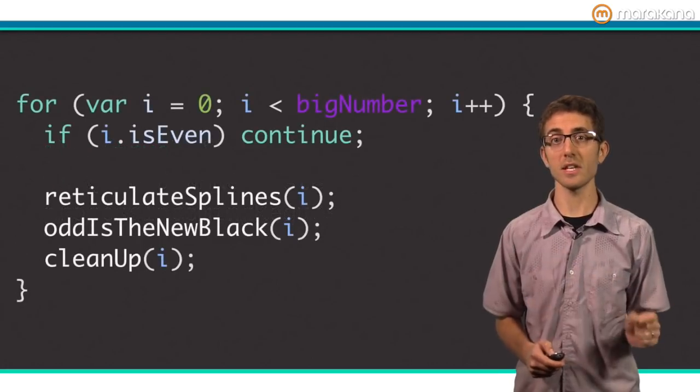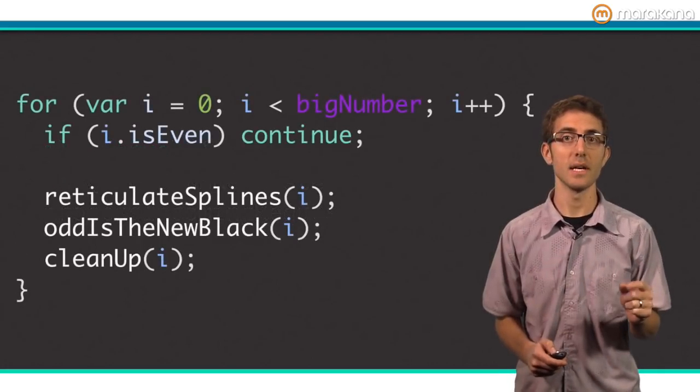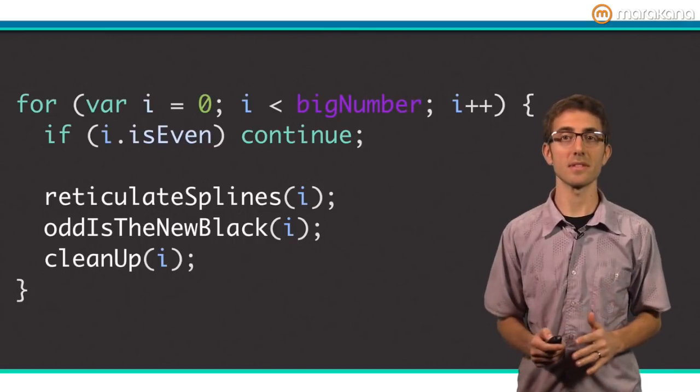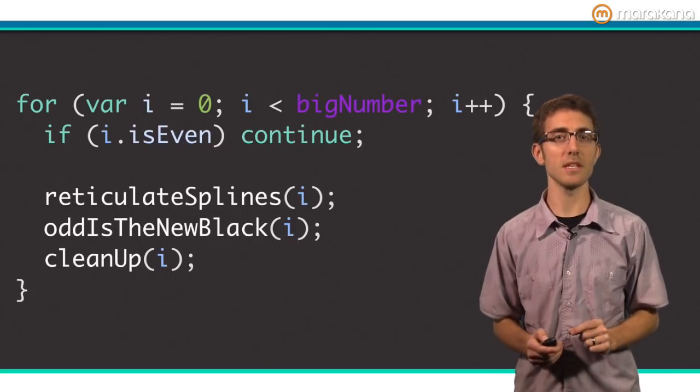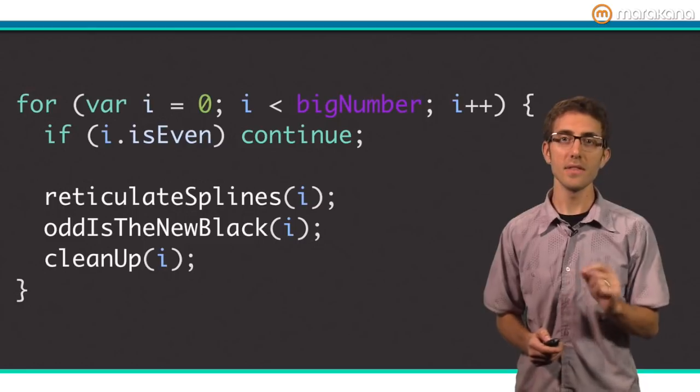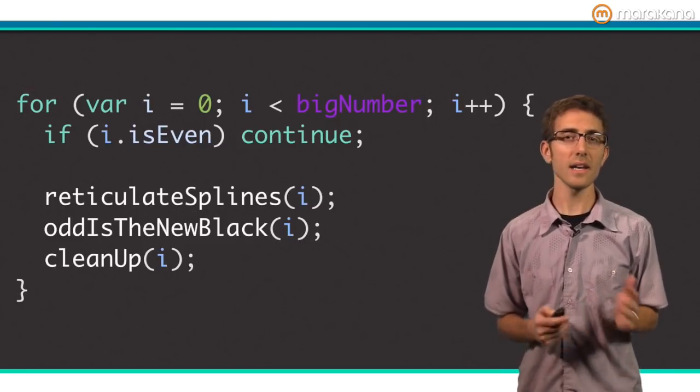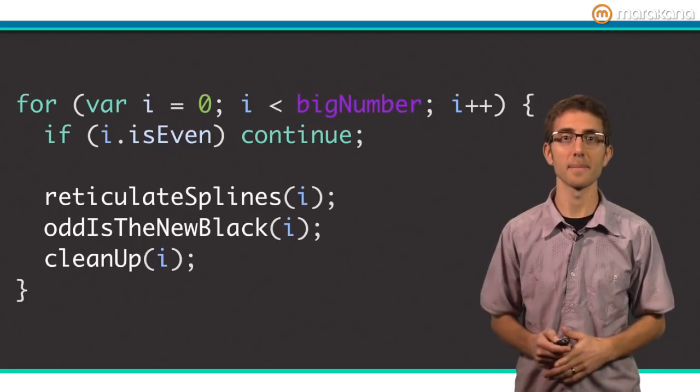You can use continue to skip to the next loop iteration. Here's an example. You can usually use if and else statements instead of continue, but sometimes it's a bit easier on the eyes to use continue. This example wants to work with only odd numbers, so the even numbers are skipped. I'd consider continue a sometimes statement, used sparingly.